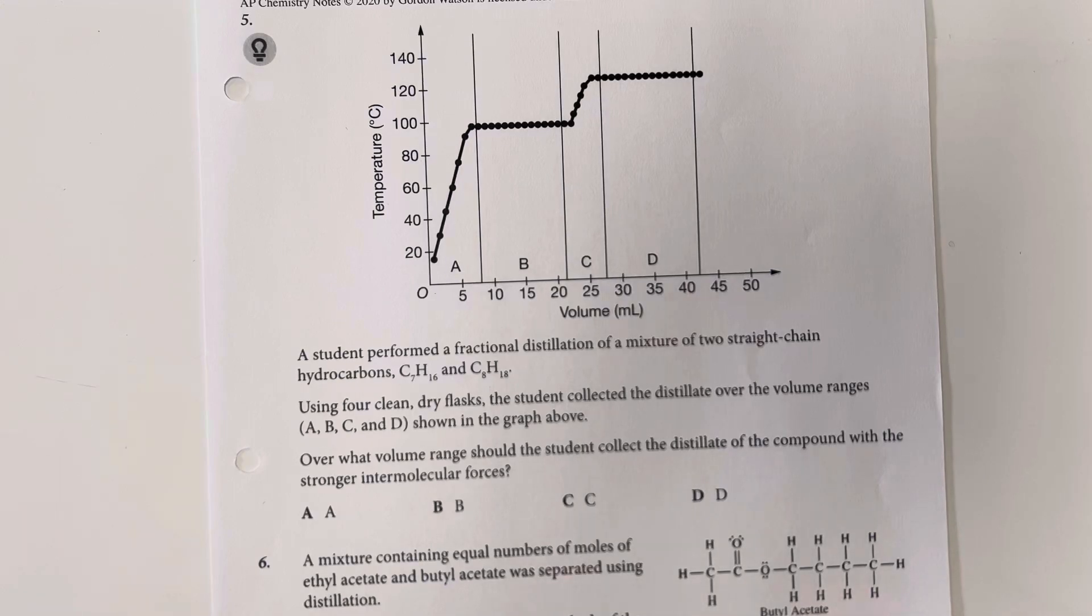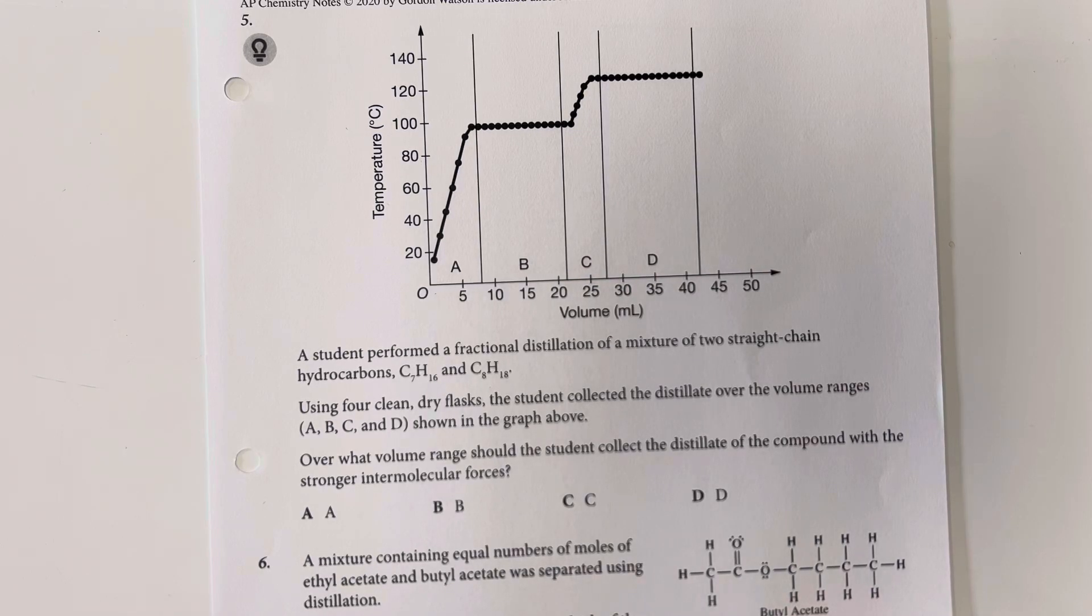A student performed a fractional distillation of a mixture of two straight chain hydrocarbons, C7H16 and C8H18. Using four clean dry flasks, a student collected the distillate over the volume ranges A, B, C and D shown in the graph above. Over what volume ranges should the student collect the distillate of the compound with the stronger intermolecular force?